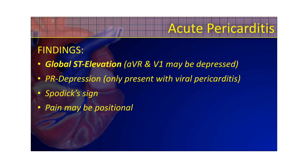Here are some of the findings you might see with acute pericarditis: global ST elevation, and again, AVR and V1, and sometimes even AVL, could have a little bit of depression. PR depression is only present with viral pericarditis, and Spodick's sign is that downward trending of the isoelectric line. Pain is going to be a big one — pain may be positional. Every EKG comes with a patient, so look at your patient. Have them lean forward and see if they get relief from the pain, and you might even see cessation of those 12-lead changes. Do a 12-lead every time they have a change in the quality or severity of their pain.